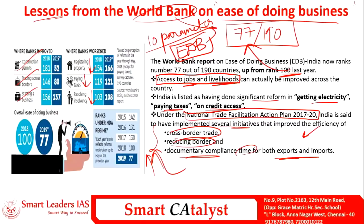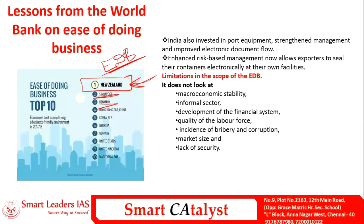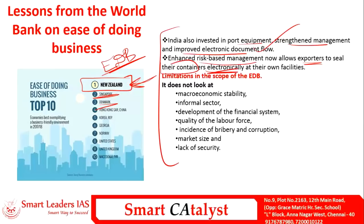Each year's rank reflects the reforms undertaken by countries. In the EDB rankings, New Zealand stands first for the consecutive third time, Singapore is second, and Denmark is third. India invested in import equipment, strengthened management, improved electronic document flow by digitizing everything with more IT infrastructure, and enhanced risk-based management, now allowing exporters to seal their containers electronically at their own facilities — a major move for exporters.